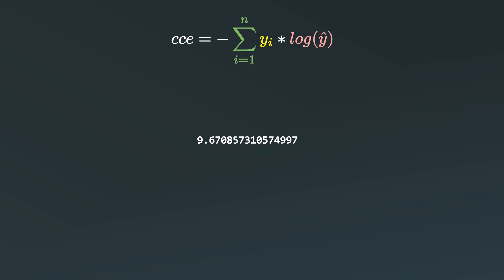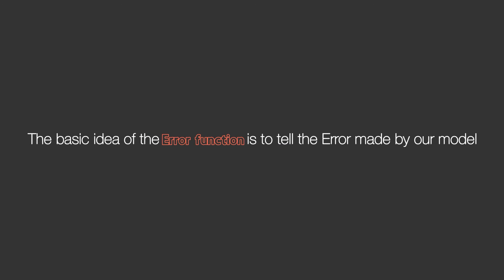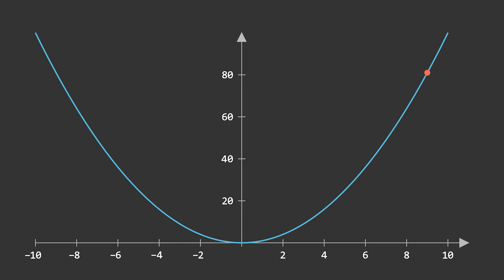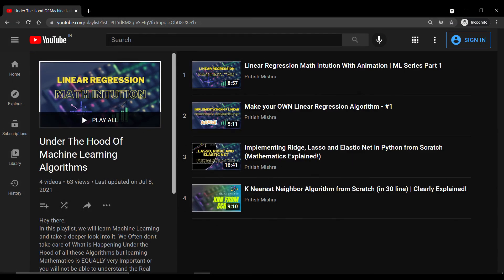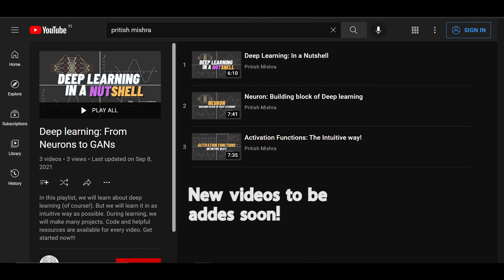We are done with both regression and classification loss functions. The main objective of the loss function is to tell the error made by our model, but we want to reduce this error — and that is the objective of all of deep learning, so we can make better models. Optimization does the job of reducing the loss function. In the next video we will discuss optimization in depth. Until then, check out my other videos; there may already be many more uploaded in this series. You can find the playlist link in the description along with other useful resources.